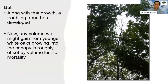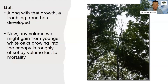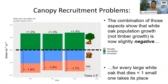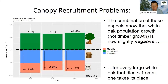Along with that increased growth — big trees getting bigger — we've had some accompanying trends. Any volume we might gain from younger White Oak trees moving into the canopy tends to be offset by trees dying, so we're not building that resource from new trees entering the system. Looking at population growth — not timber growth, but the number of trees on the landscape — those trends are trending negatively. For every large White Oak tree that dies, we have less than one small White Oak growing into the canopy to take its place.